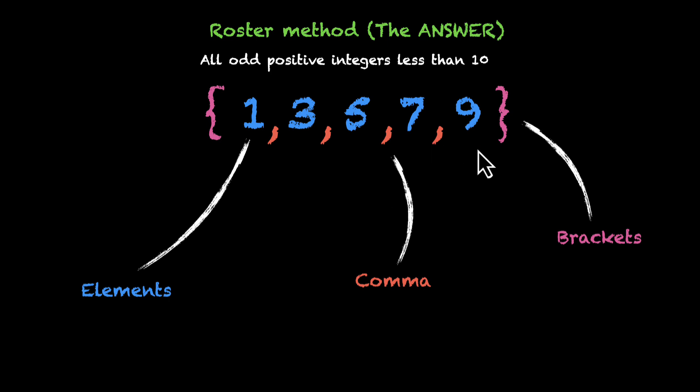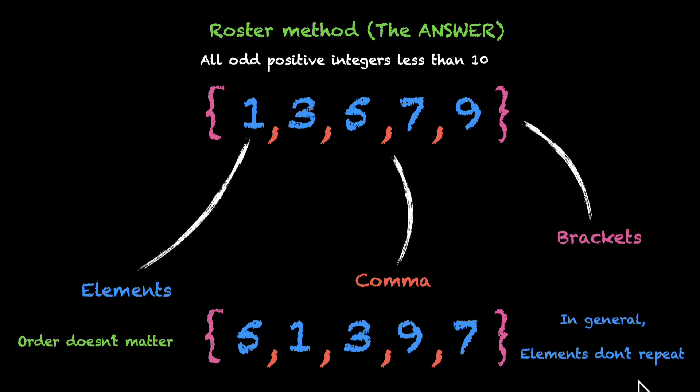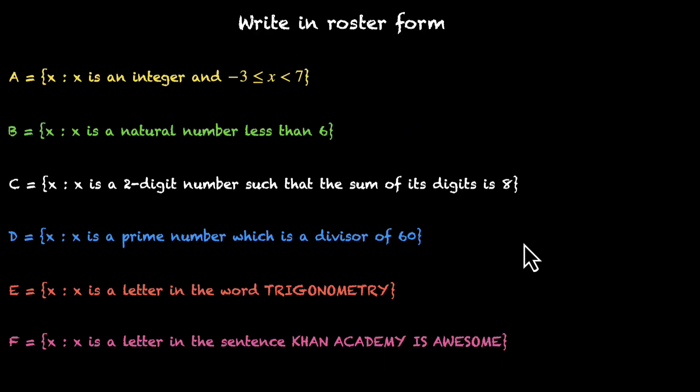A very quick note, you can write these elements in any order. So you can have 1, 3, 5, 7, 9 in this order because the order does not matter and you don't repeat the elements. So with this in mind, let's move to our questions.